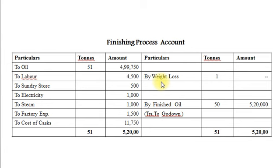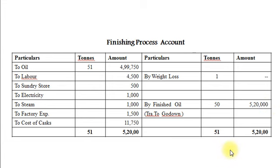On the credit side: loss in weight 1 ton. Finished oil produced and transferred to godown: 50 tons. Total cost Rs. 5,20,000, calculated as total debit side minus credit side — realized value is nothing. Per ton cost: Rs. 5,20,000 divided by 50 tons equals Rs. 10,400. Here our finishing process account is complete.